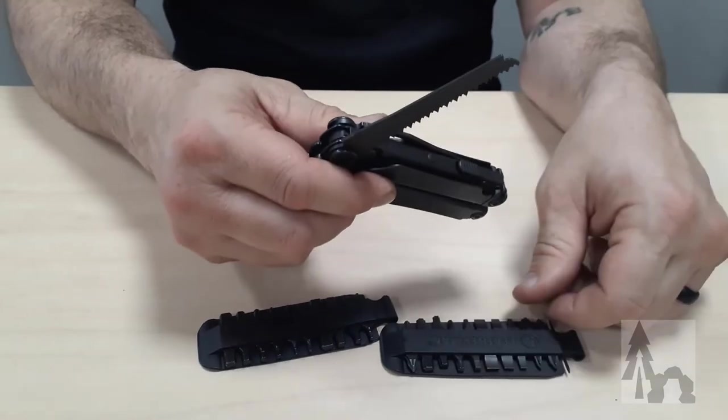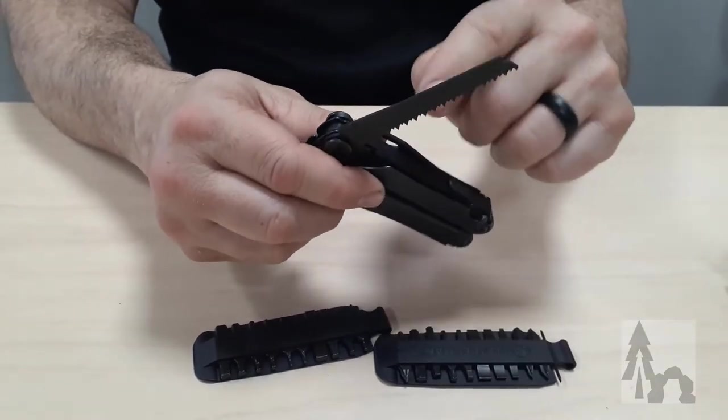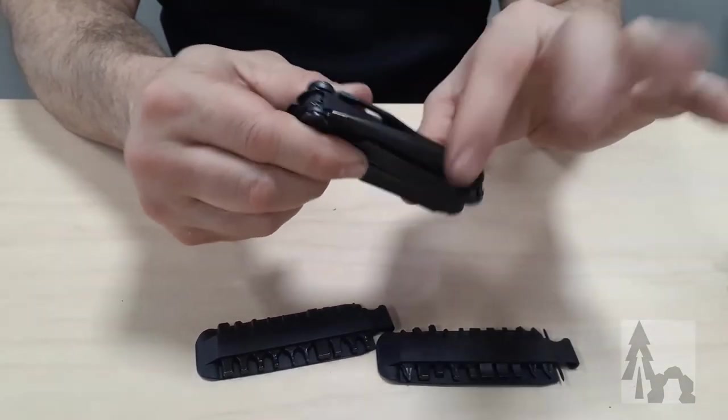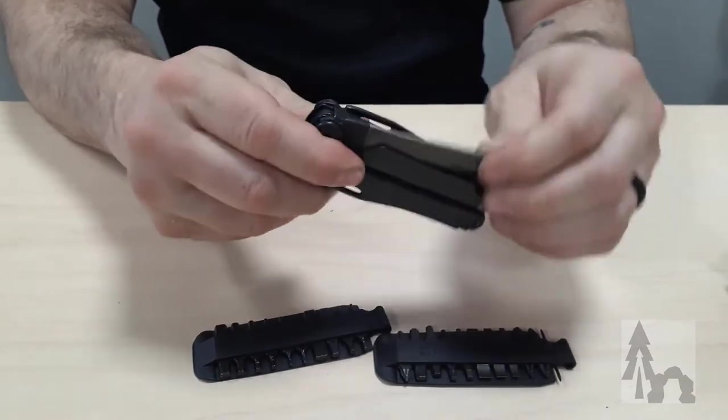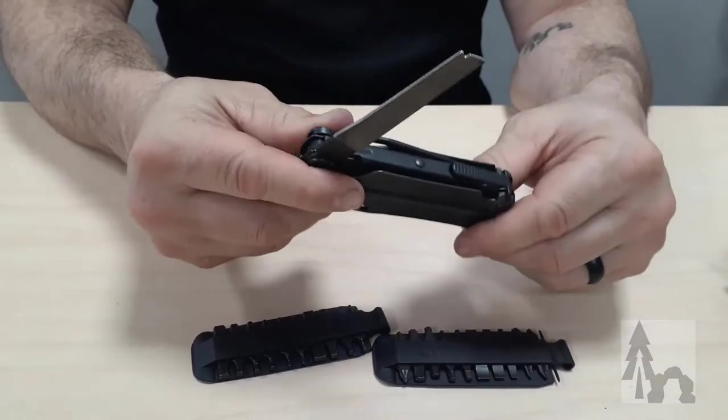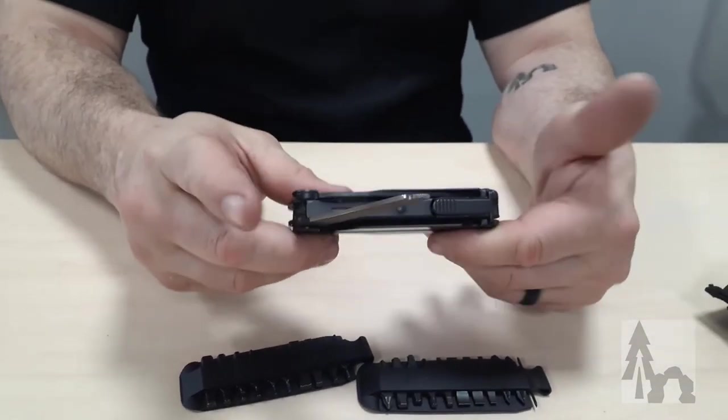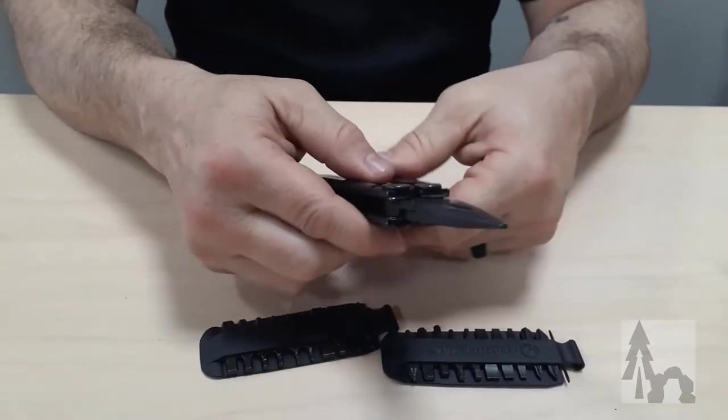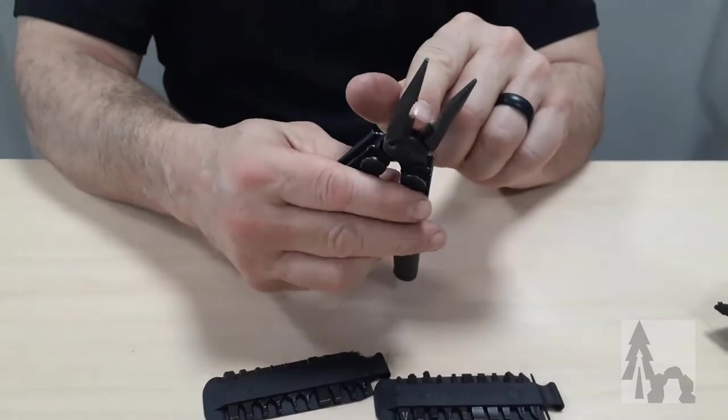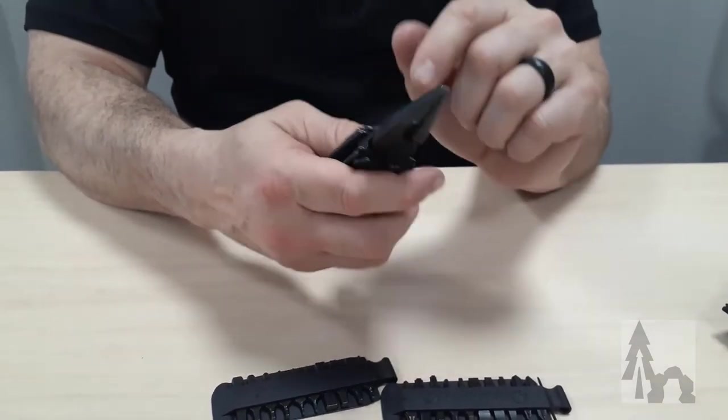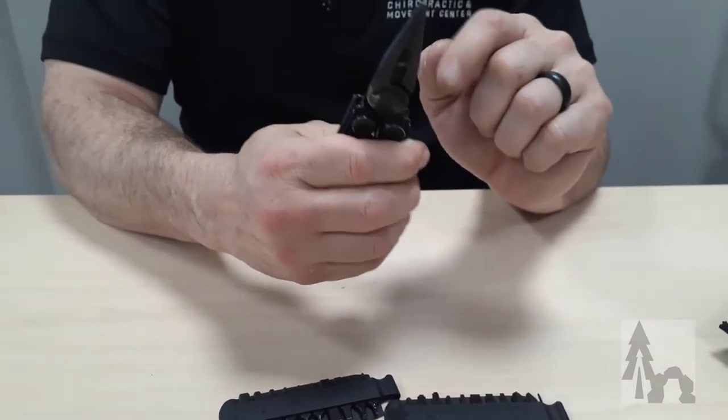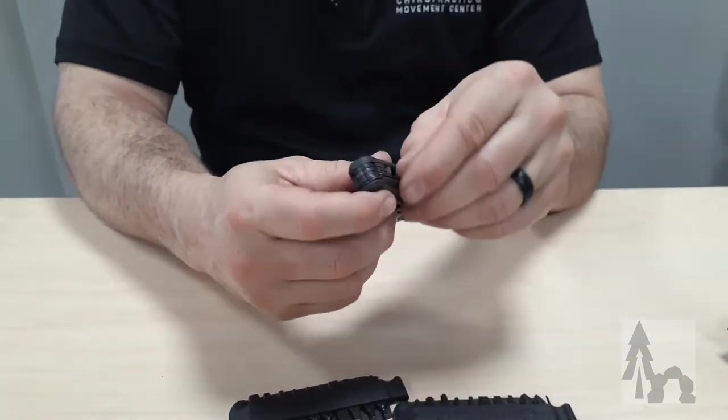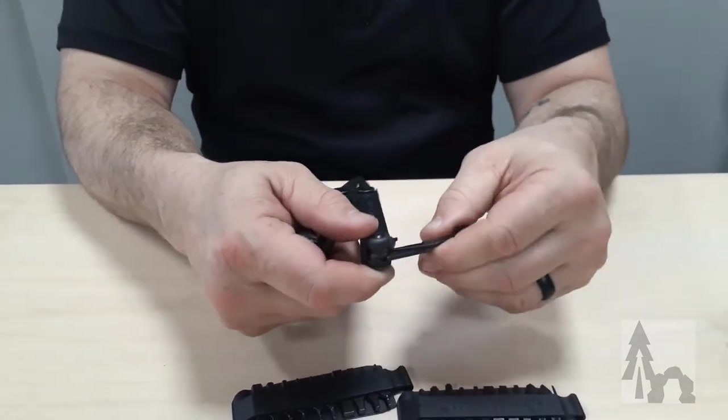The other two tools you can access from the outside are a saw - a little coarse saw with a real sharp spine - and rotating on the opposite side is a file. The inside of the Wave, like most Leatherman, has these pliers, wire cutters, needle nose, and then coarse gripping pliers.